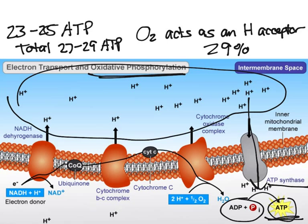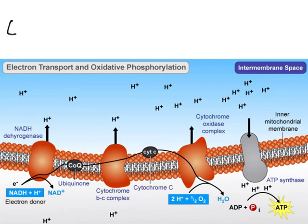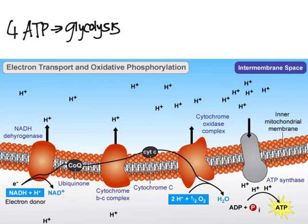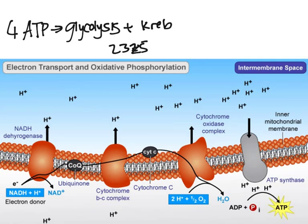To summarize: 4 ATP come from glycolysis and the Krebs cycle combined, and then the rest — 23 to 25 ATP — comes from oxidative phosphorylation.